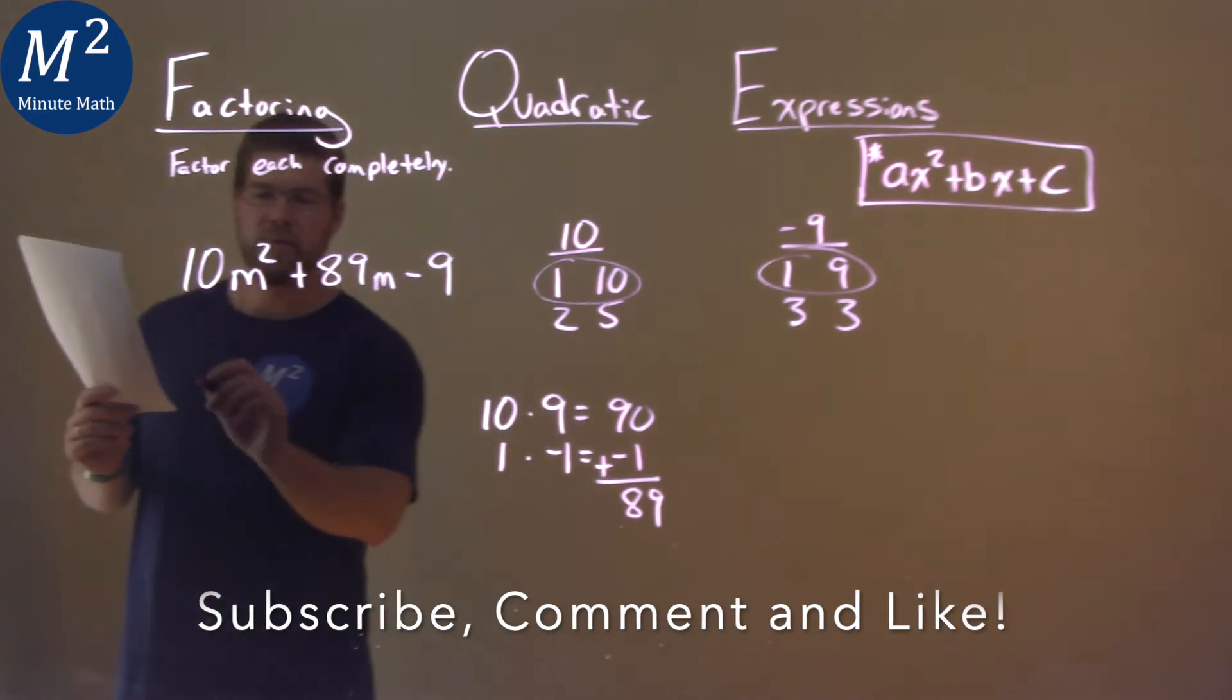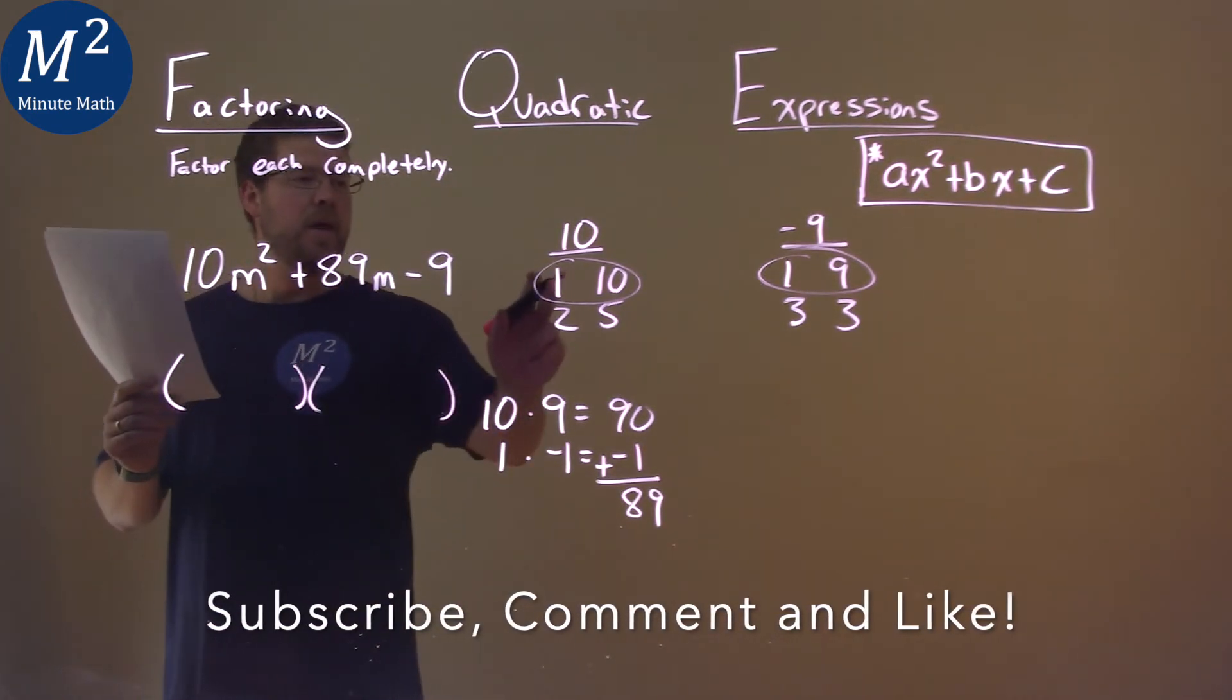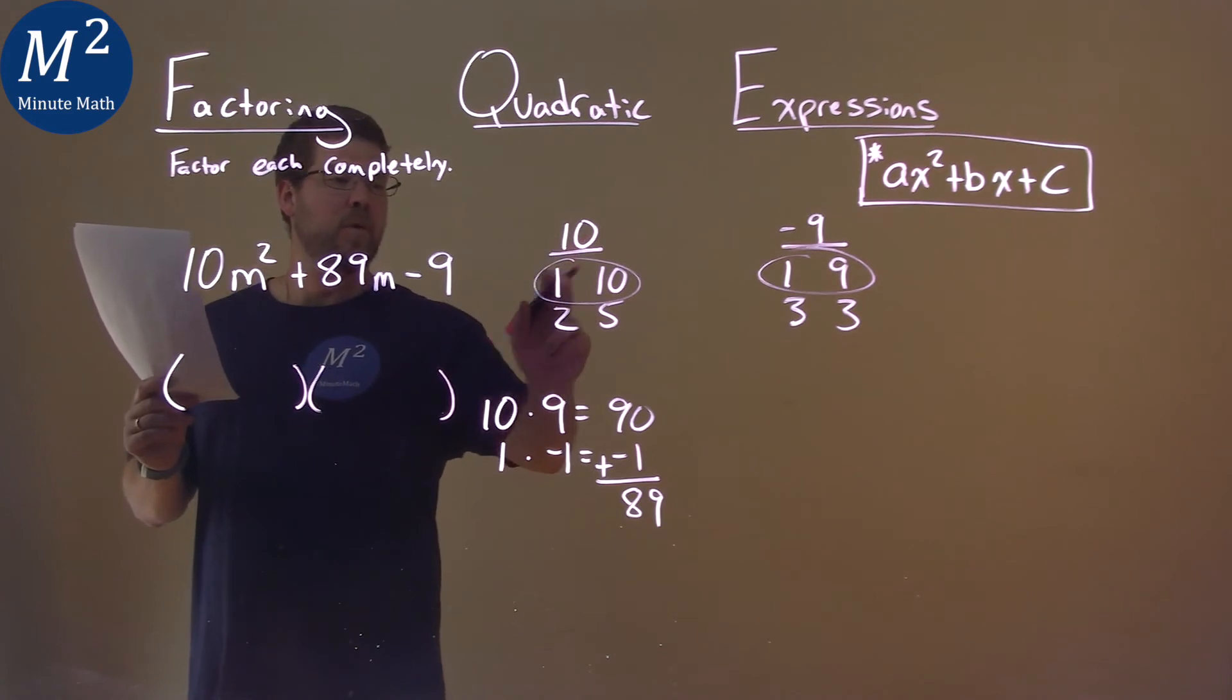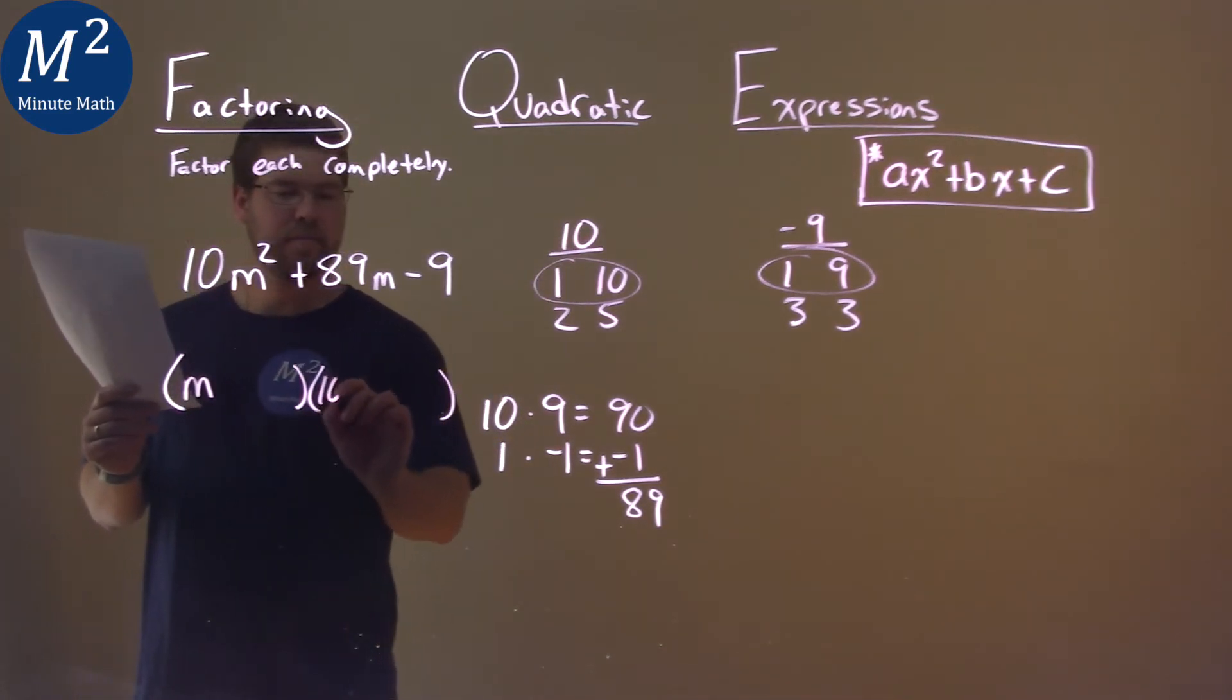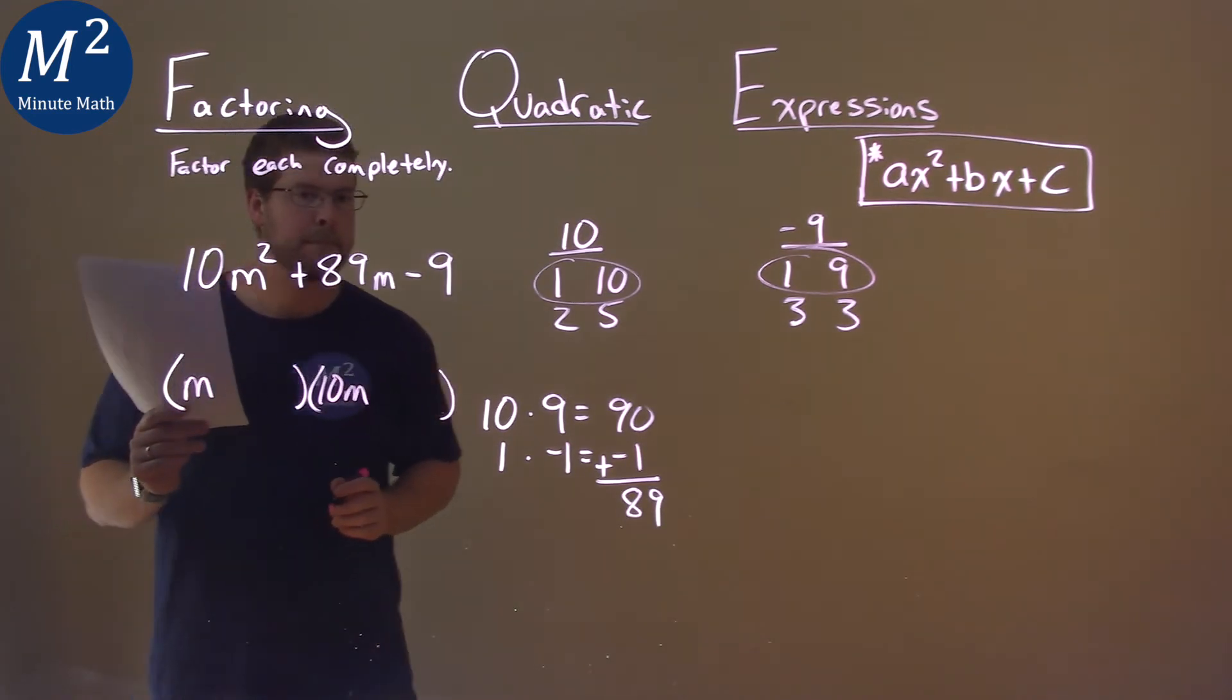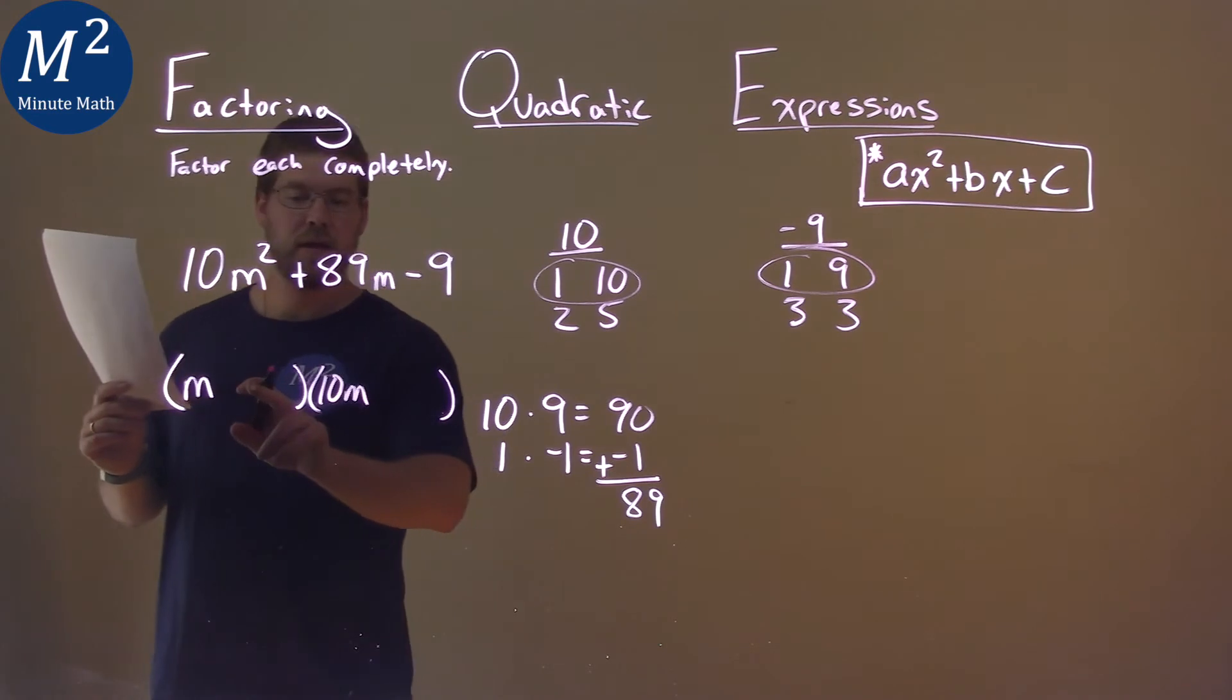So how can we write this out? Well, we know it has to be in this sum factor form, and our a value breaks out to be 1 and 10. So let's do 1m here and 10m here. Now, 10 had to be multiplied by the 9, meaning we had to put the 9 on this side.